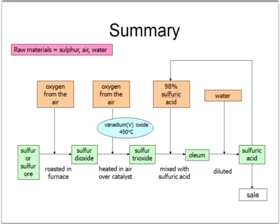Here's a diagrammatic summary of the process. Starting with sulfur or an ore containing sulfur, the sulfur is roasted in a furnace using oxygen from air to make sulfur dioxide. The sulfur dioxide is combined with oxygen from air and passed over a vanadium five oxide catalyst at around 450 degrees at atmospheric pressure, producing a mixture that includes sulfur trioxide. The sulfur trioxide is then dissolved in 98% sulfuric acid to make oleum, which is diluted with water to make sulfuric acid. Some is sold and some is recycled back into the process.